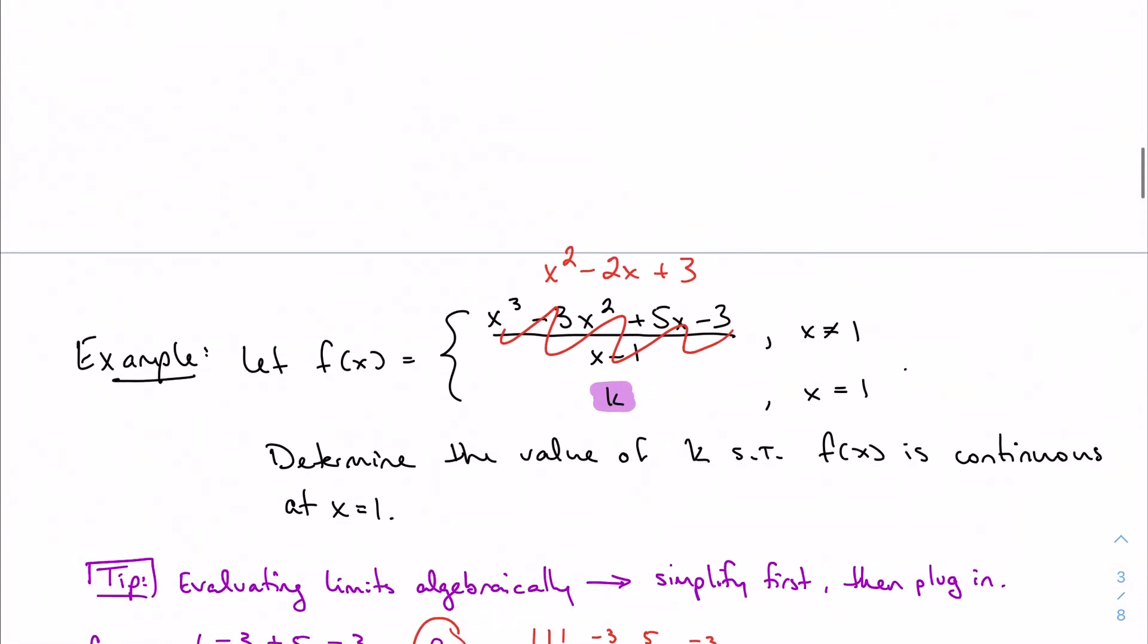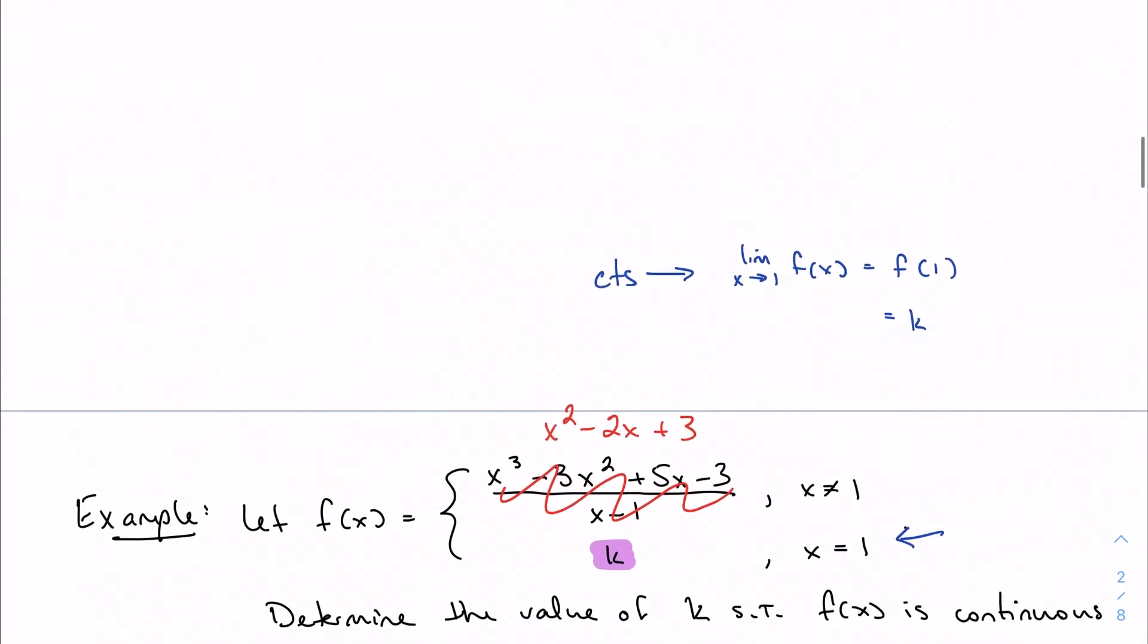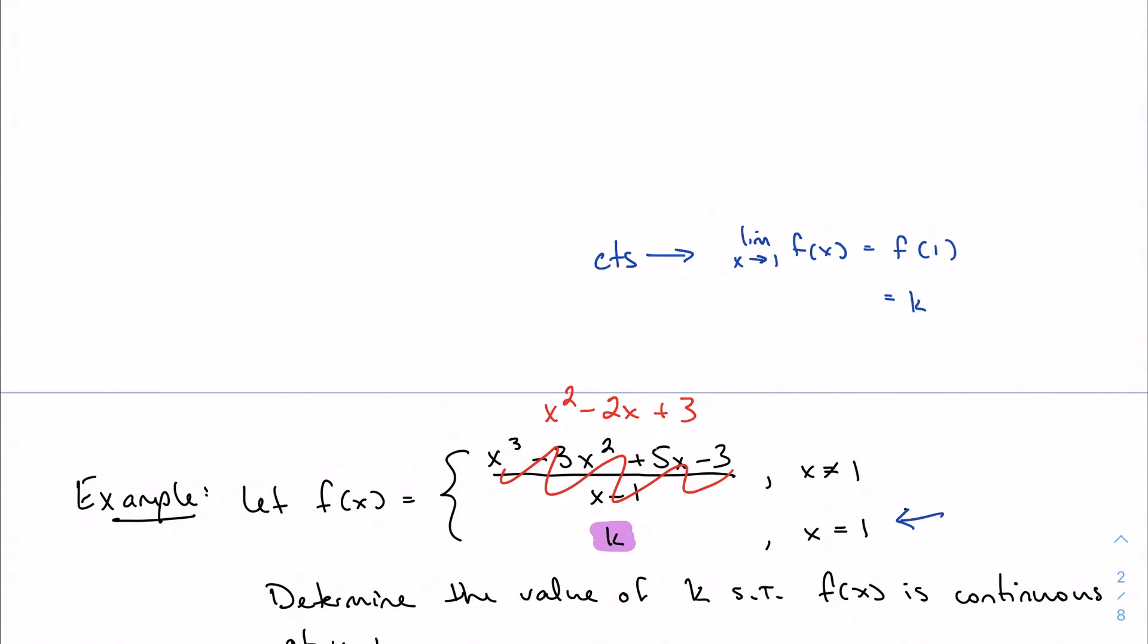I'm just going to move my work up here. Remember to be continuous, we want to make sure the limit as x approaches 1 of the function is equal to f(1). And f(1) is k. As I said, when you're evaluating limits algebraically, simplify first, we just did that, and then plug in. So we've simplified as much as we can. Let's plug in 1. I get 1² - 2(1) + 3. I get 1 - 2 + 3. I get positive 2 equals k. So k equals 2.